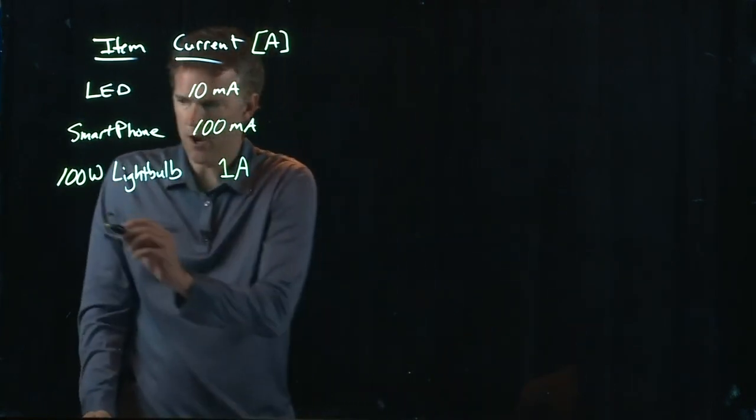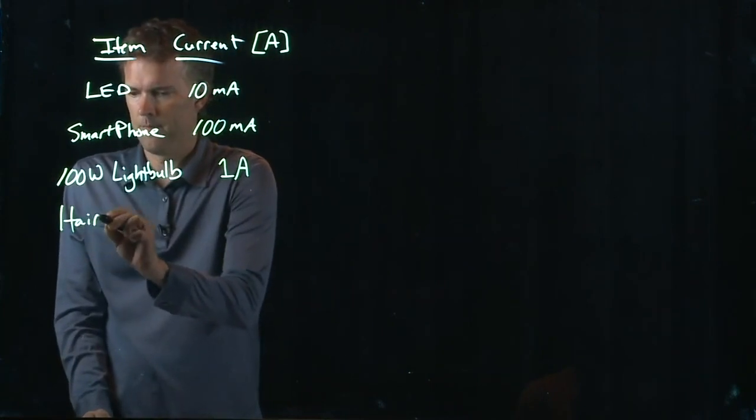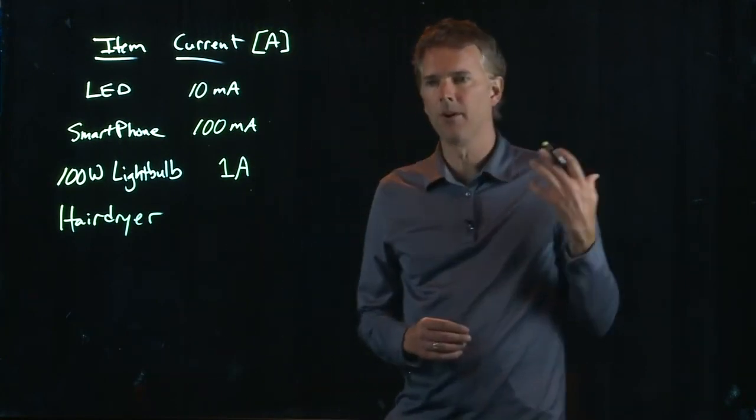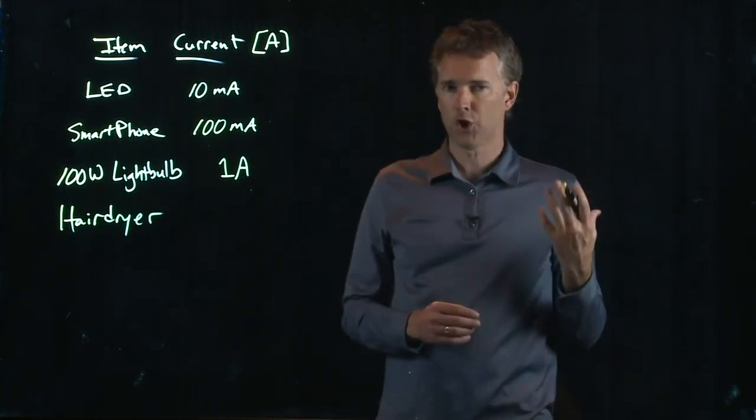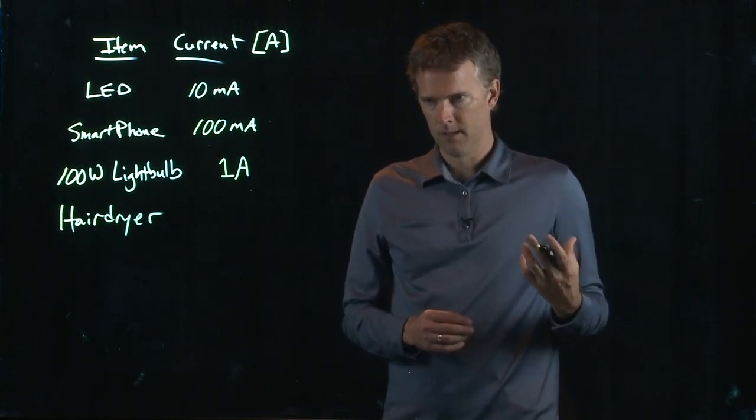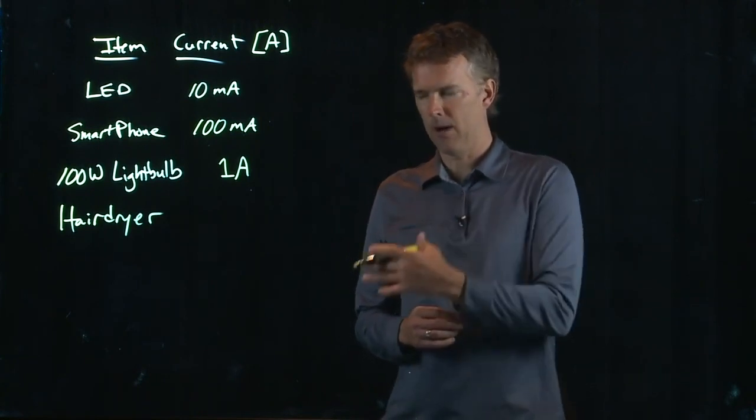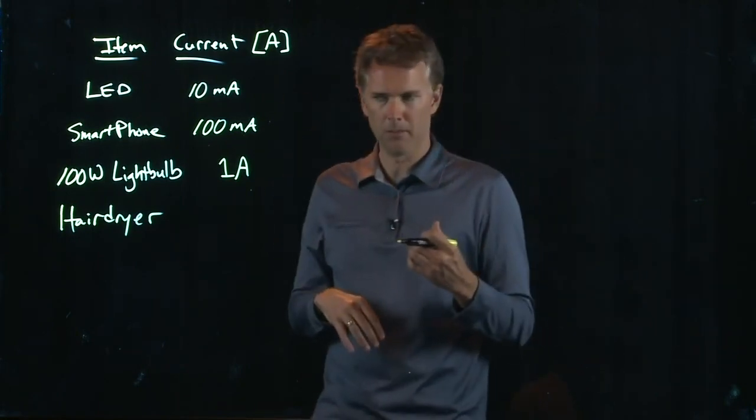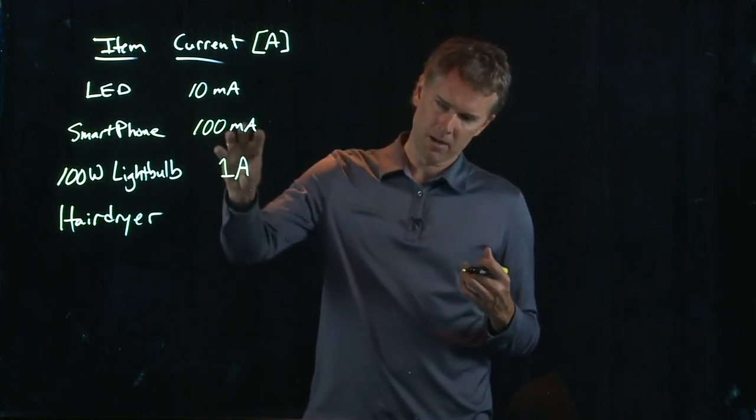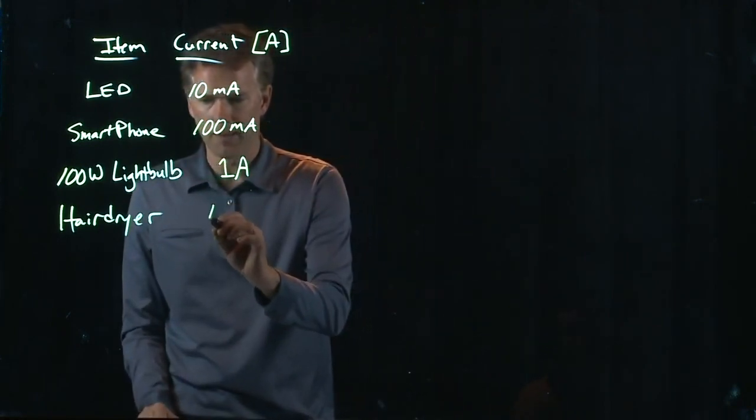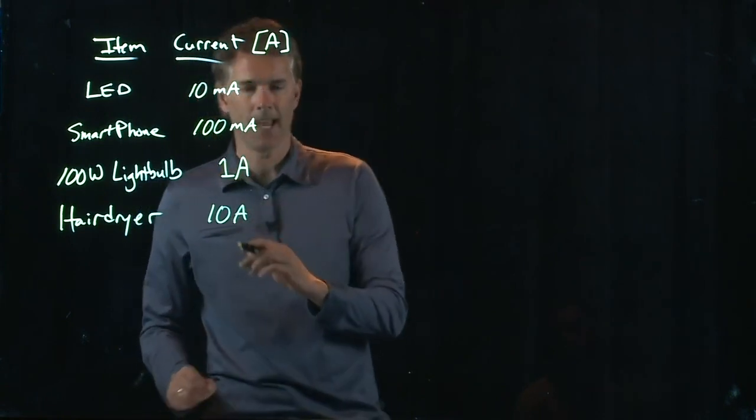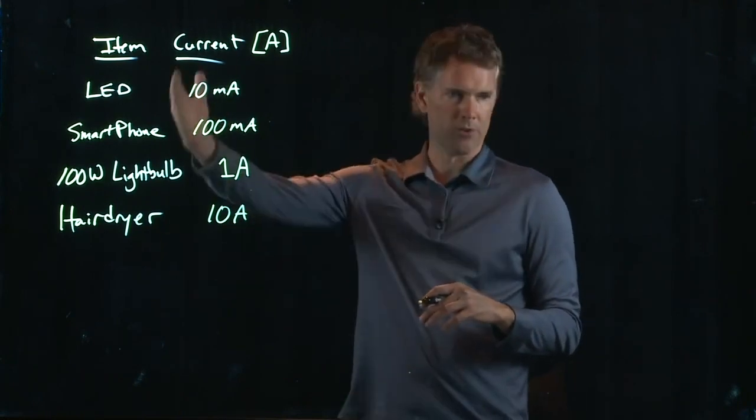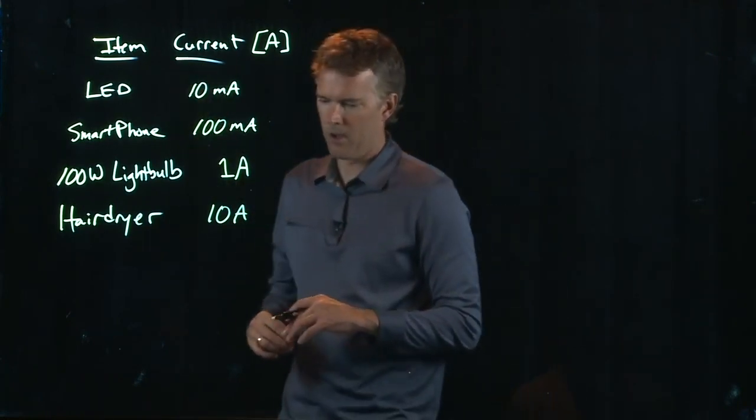What about your hair dryer? When you fire up your hair dryer, how much current does it draw? Well, we talked about the power of the hair dryer. When you turn on your hair dryer, you can actually see the lights dim in your house a little bit. So it seems like it's got to be considerably more than a light bulb. And in fact, it is, it's on the order of 10 amps. So look, we've already gone four orders of magnitude here, up to a hair dryer.